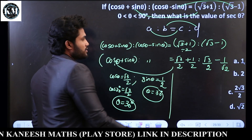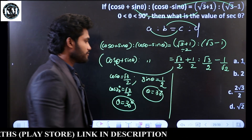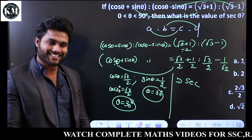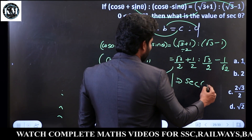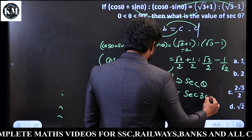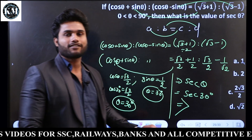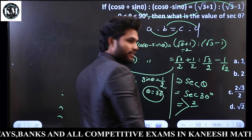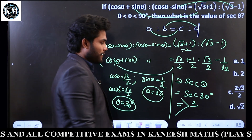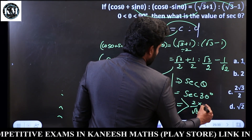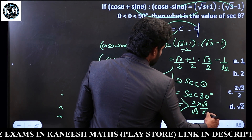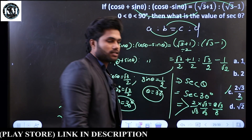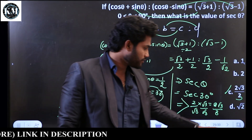So what is the value of sec θ? Sec 30 — we know sec 30 is 2 by root 3. But the answer is 2 root 3 by 3. Option C is the answer: 2 root 3 by 3.